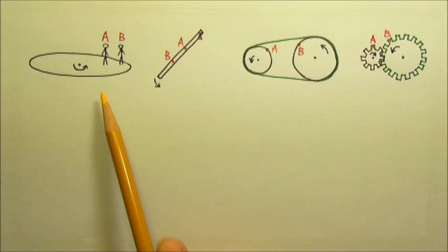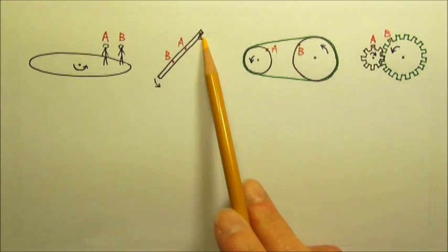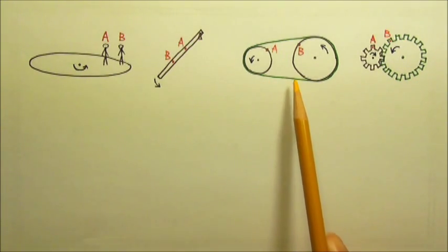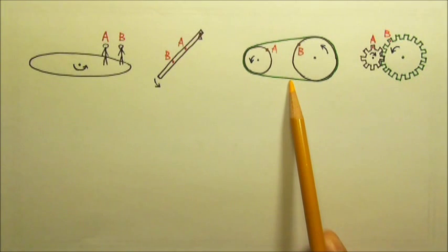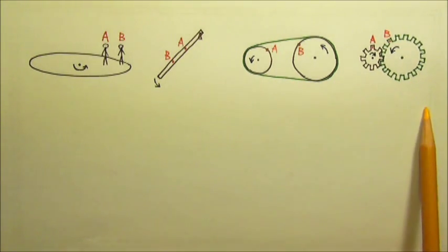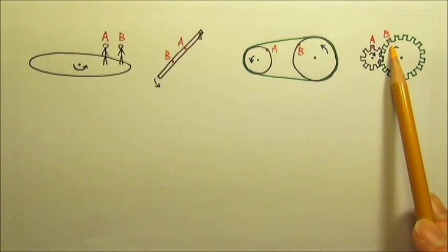Here we have two people standing on a merry-go-round, a stick swinging down about a fixed axis, two rotating discs connected by a belt that does not slip, and two sets of meshing gears. For each scenario, please see if points A and B have the same linear speed or the same angular speed.